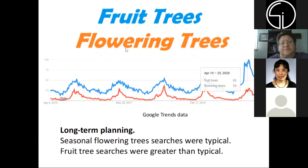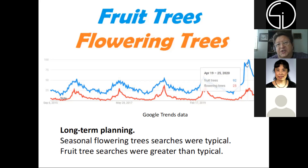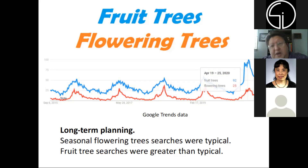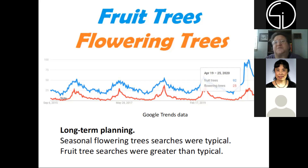Looking at fruit trees versus flowering trees, you see seasonal spikes in both. However, during April of this year, you see a much more significant spike in fruit trees. So if you're trying to develop a hypothesis using this as exploratory research — looking for something where you might get some interesting results — fruit trees stand out.